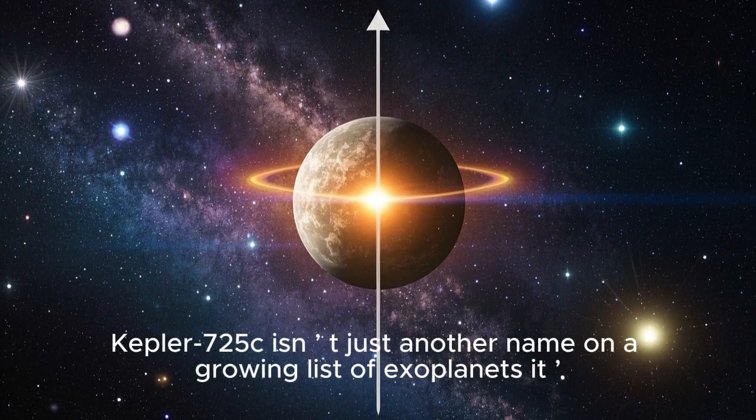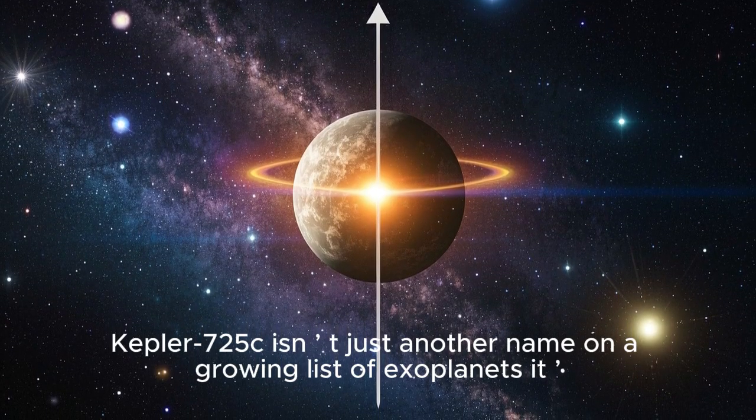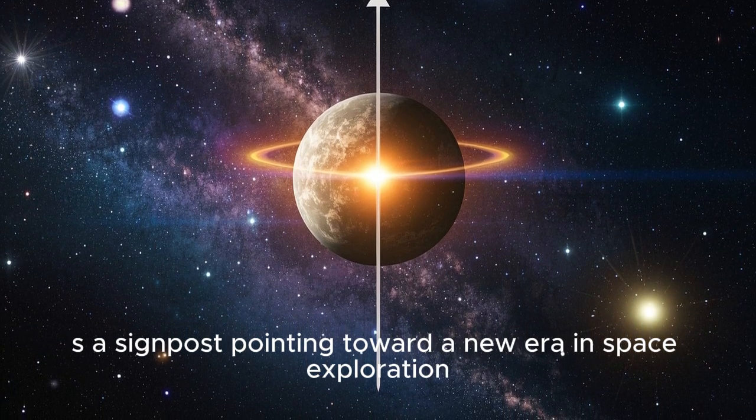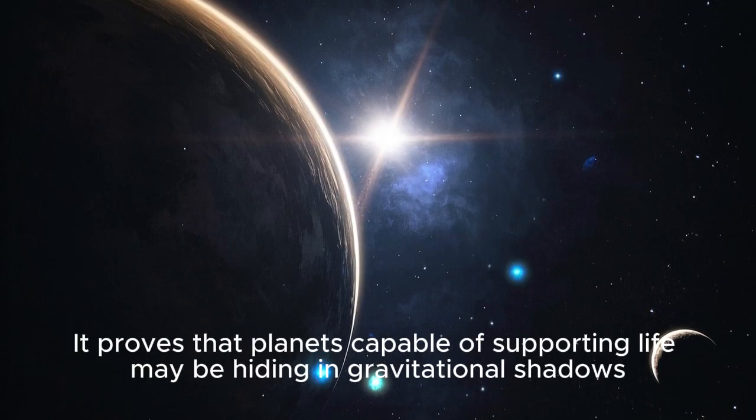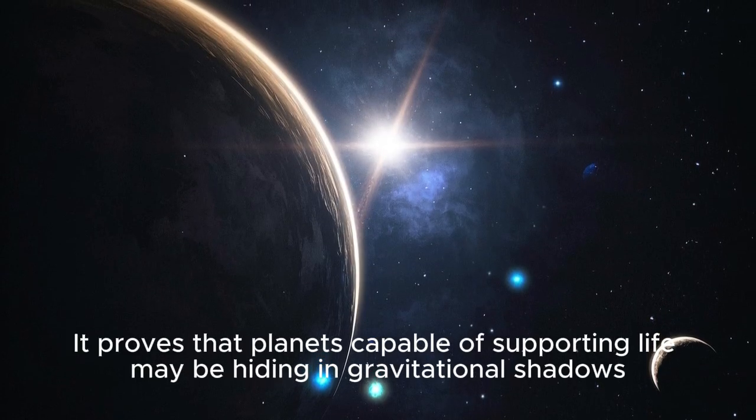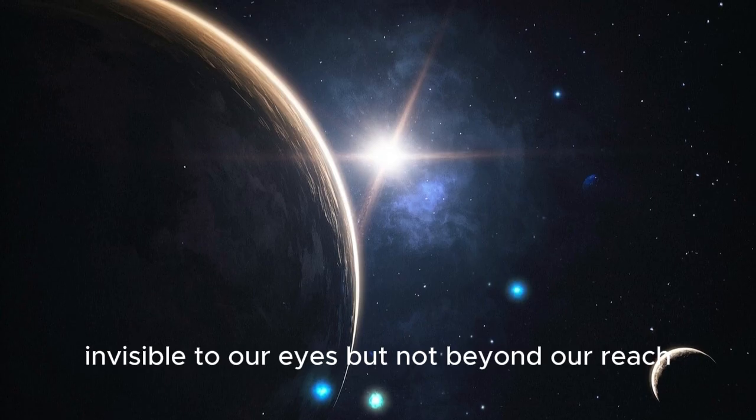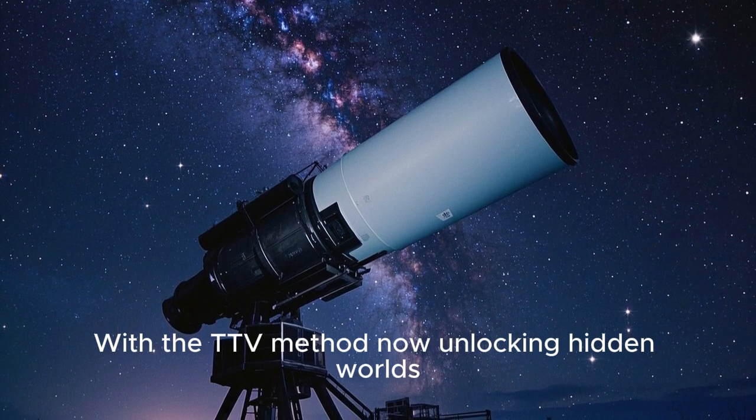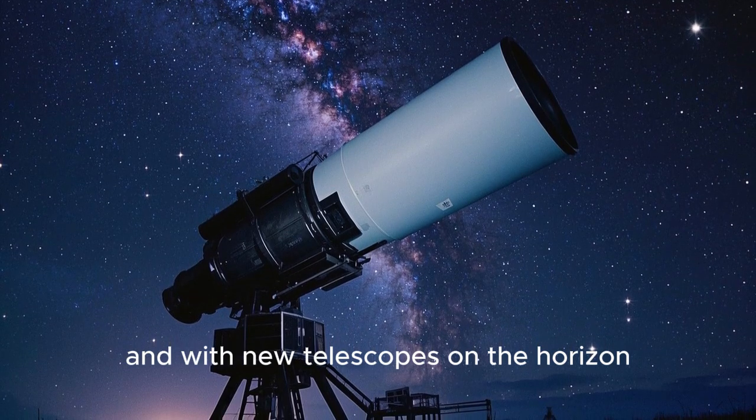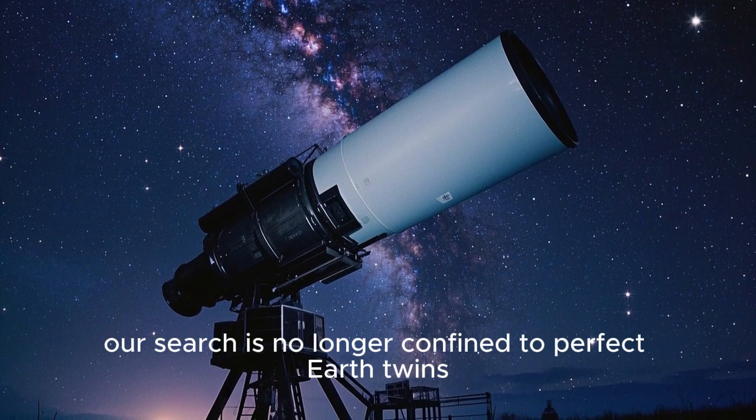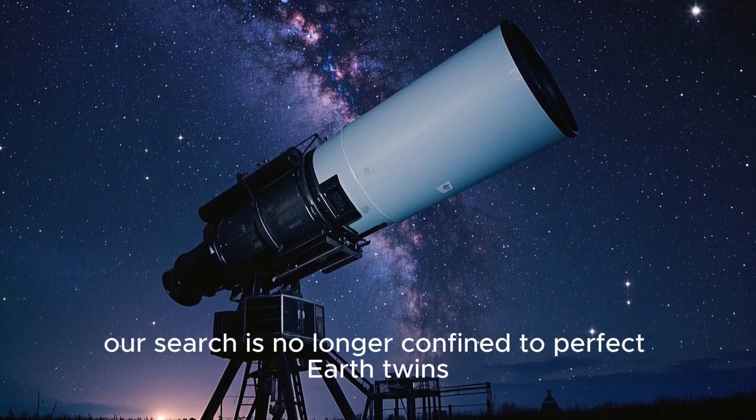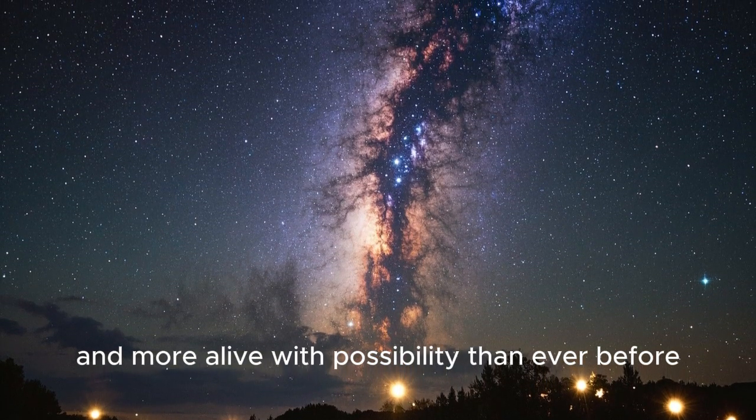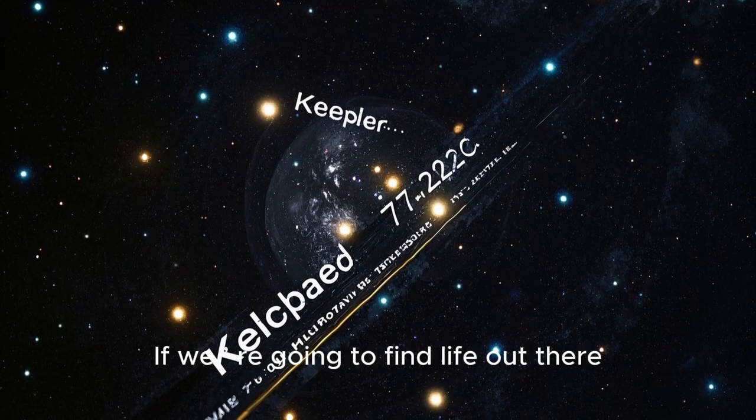Kepler-725c isn't just another name on a growing list of exoplanets. It is a signpost pointing toward a new era in space exploration. It proves that planets capable of supporting life may be hiding in gravitational shadows, invisible to our eyes but not beyond our reach. With the TTV method now unlocking hidden worlds, and with new telescopes on the horizon, our search is no longer confined to perfect Earth twins. The universe is stranger, wider, and more alive with possibility than ever before. If we're going to find life out there, Kepler-725c just might be the trailhead that leads us there.